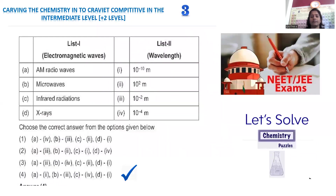Let's move on to question number 3. This is a mapping problem related to spectroscopy. Electromagnetic waves are provided with their corresponding wavelengths, and we must give the correct arrangement. The electromagnetic spectrum is fragmented into different ranges: highest energy is cosmic rays, then X-rays, ultraviolet, visible, infrared, microwave, radio waves, and AM waves.